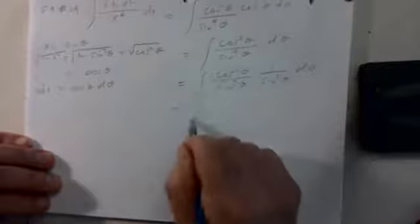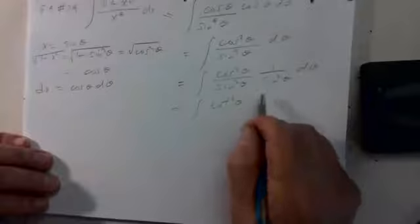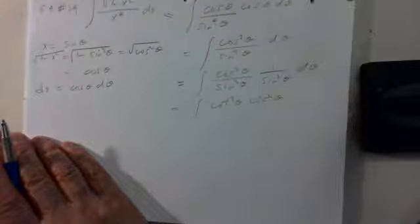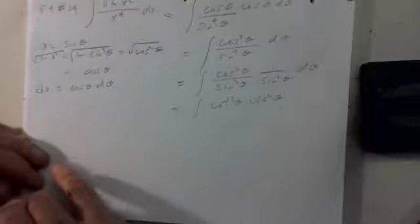We can write this as cosine squared theta over sine squared theta times 1 over sine squared theta d theta. That's cotangent squared times cosecant squared theta. Though I'm not sure that's going to be immediately helpful.